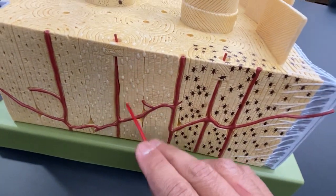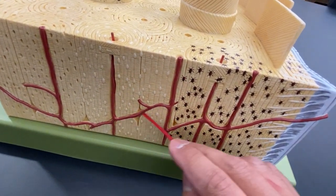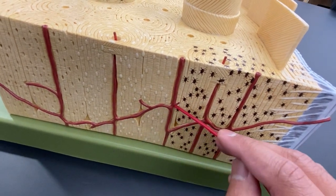This right here is the central canal again, and then there's the perforating or Volkmann's canal right in here.